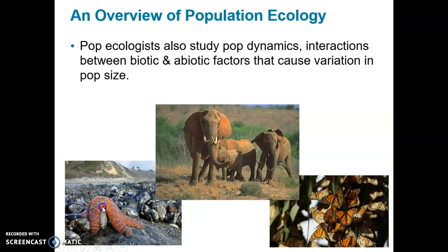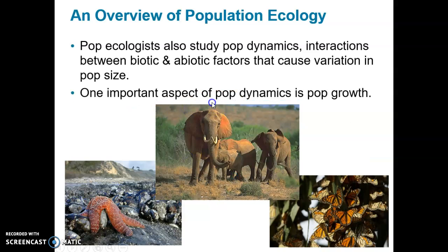Abiotic factors also include how long animals are exposed during low tide, salinity of the water, and for terrestrial organisms, air temperature, rainfall, and water availability. One important aspect of population dynamics is population growth — how fast a population might be growing or decreasing — and that is based on the reproduction of individuals.